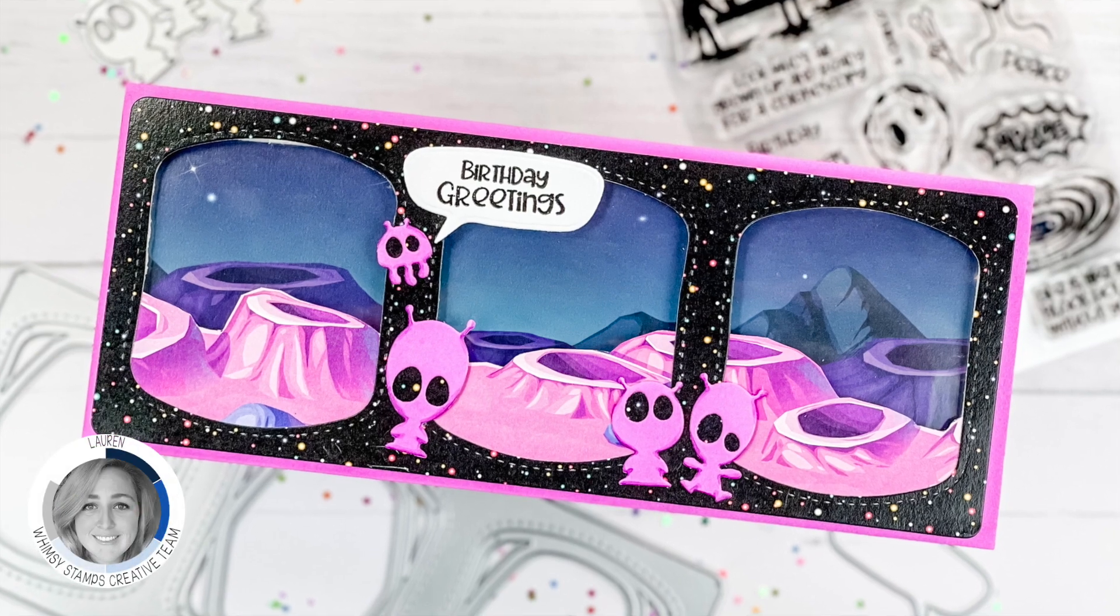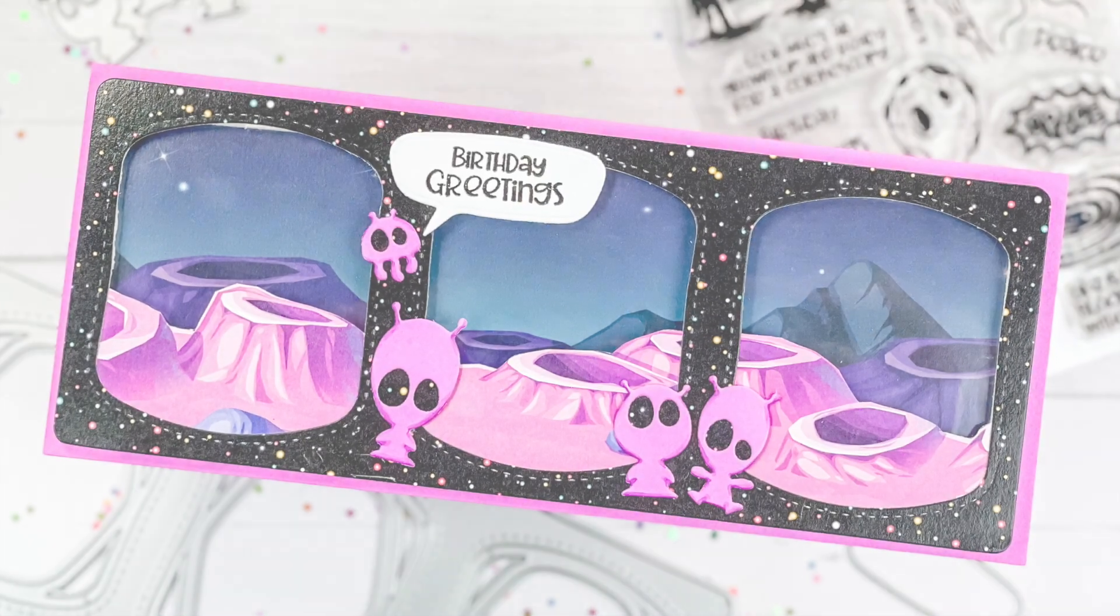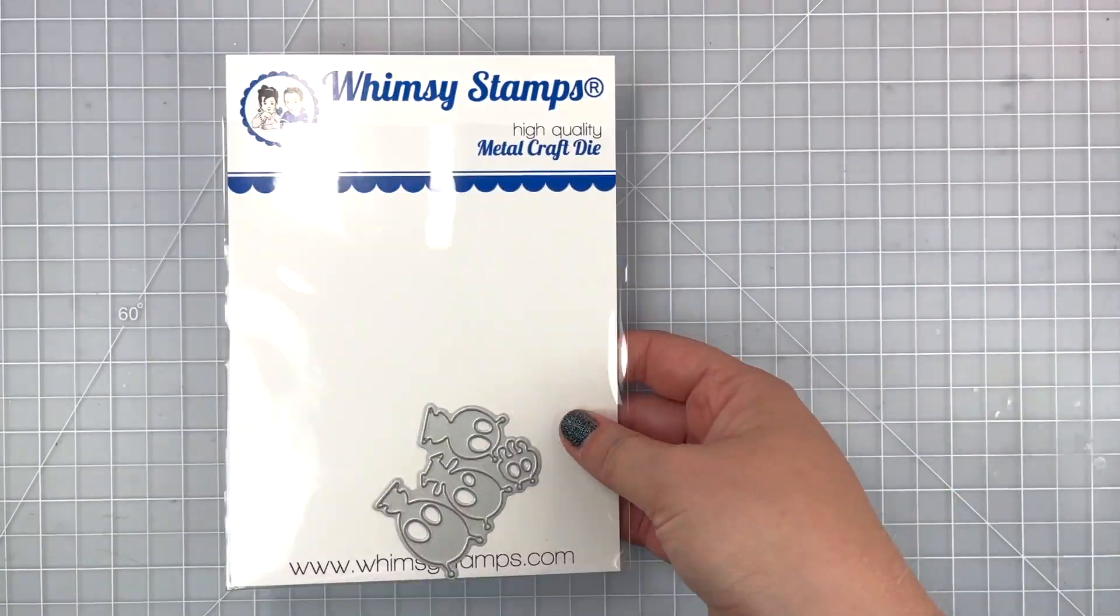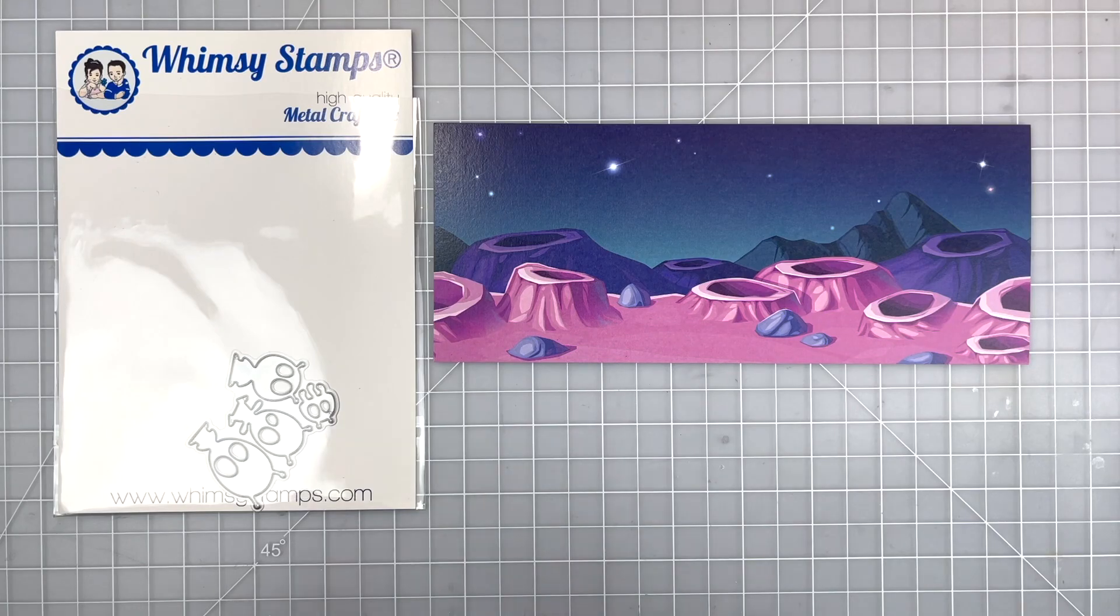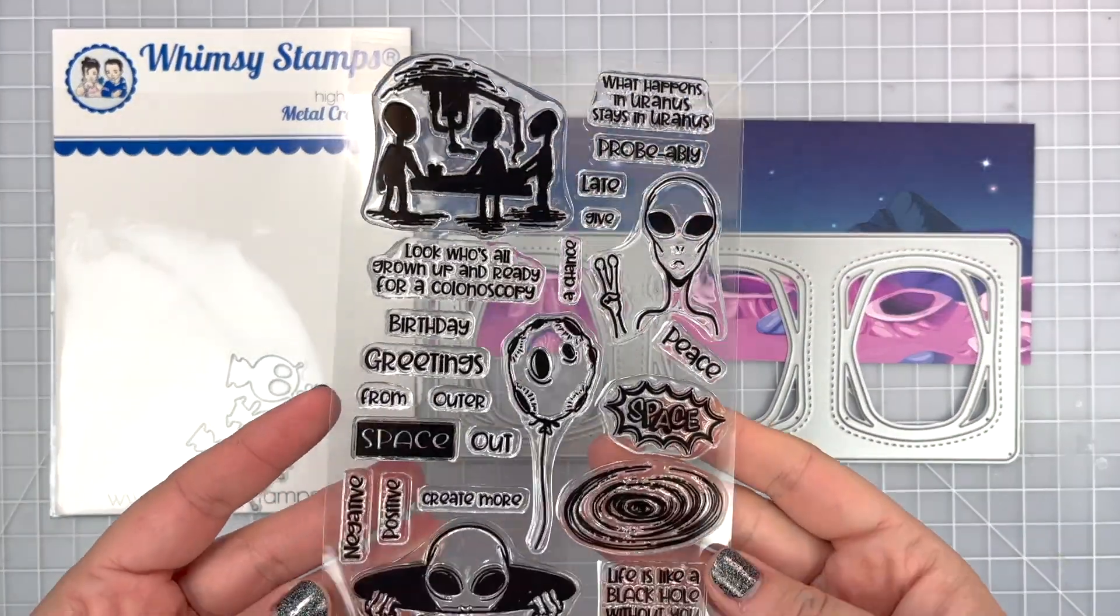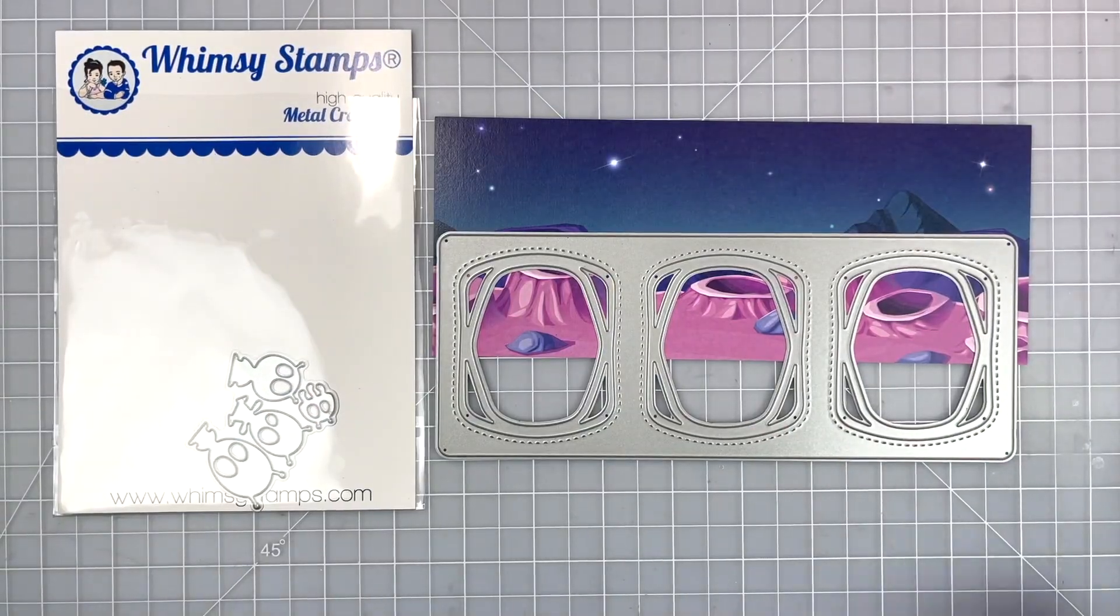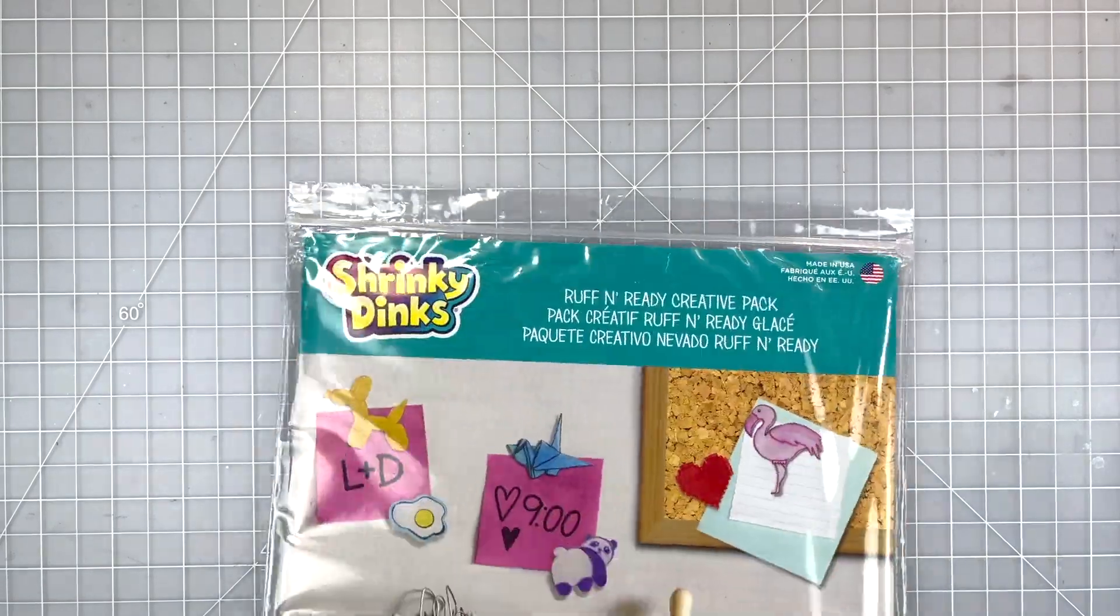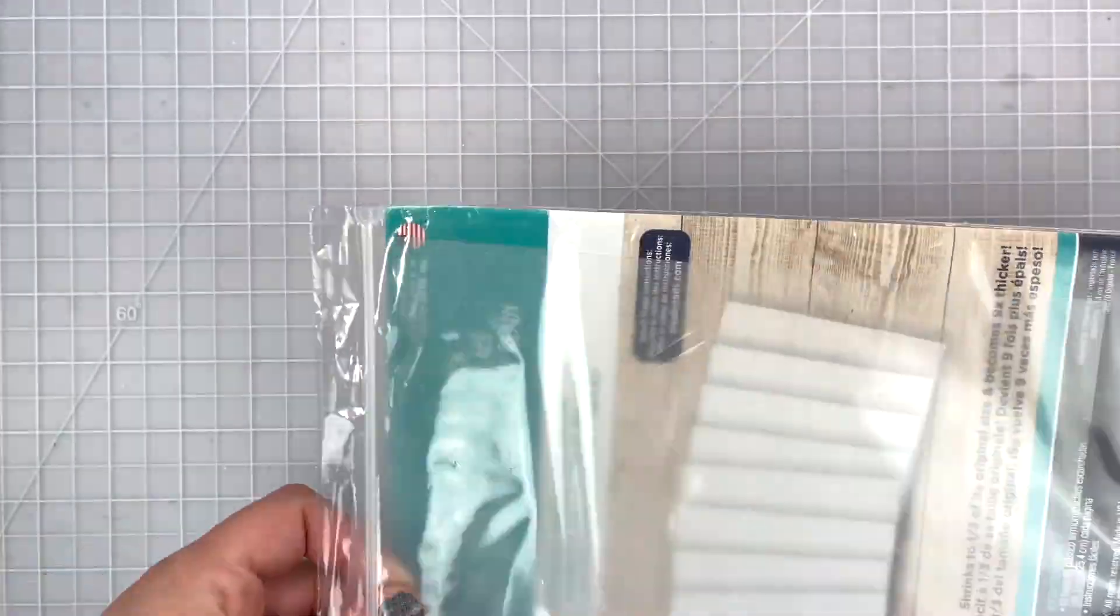Hi and welcome back for another Whimsy Stamps card. We're going to be making this slimline shaker card and I'm super excited to share how I created my own little shaker bits using the brand new Space Minions die set from Whimsy Stamps. We're also using the Lost in Space slimline paper pack, the slimline Observation Deck die, and our Black Hole clear stamps for a sentiment.